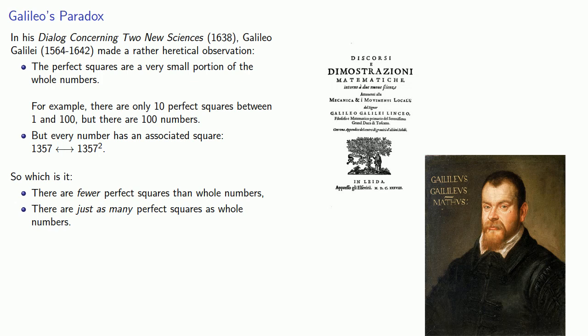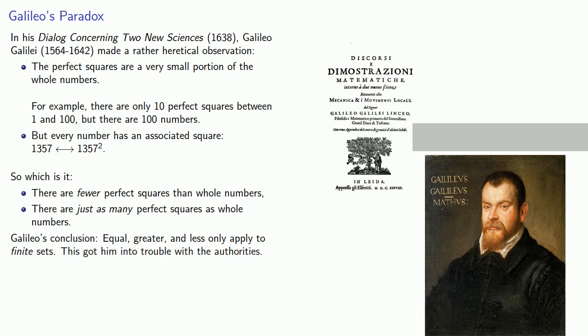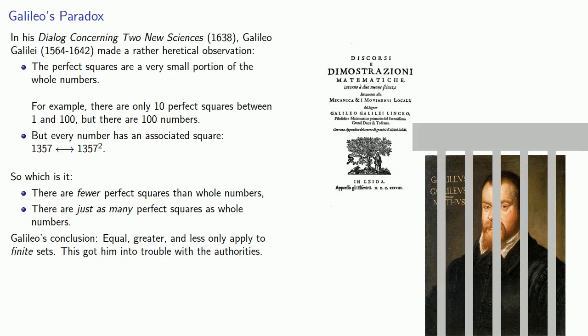Galileo's conclusion: equal, greater, and less only apply to finite sets. And this radical idea got him into trouble with the authorities. Well, his support of the heliocentric model also played a role.